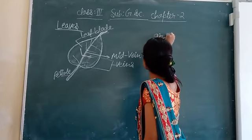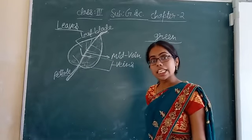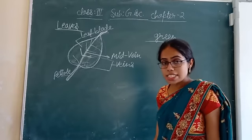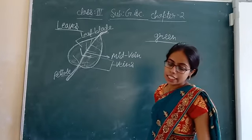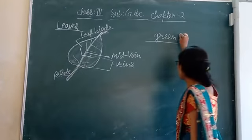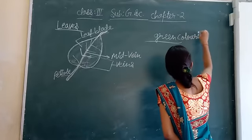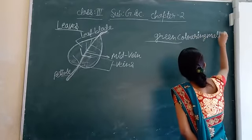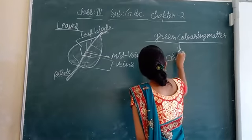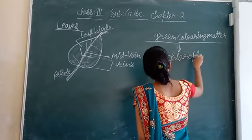Leaves are mostly green in color. The green color of the leaves is due to the presence of the green coloring matter, and this green coloring matter is called chlorophyll.